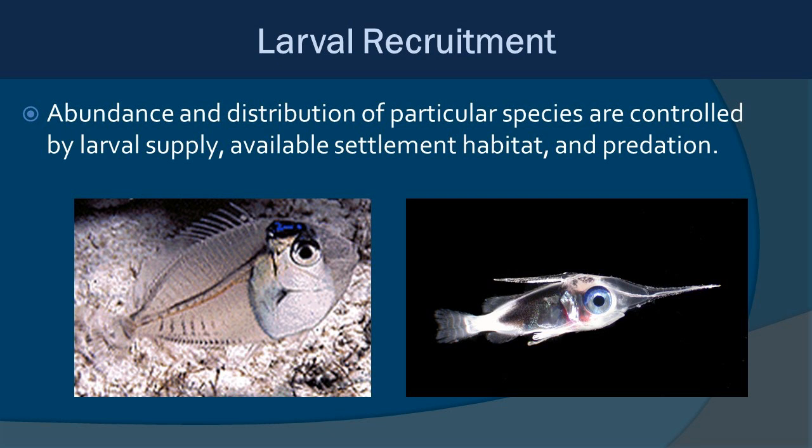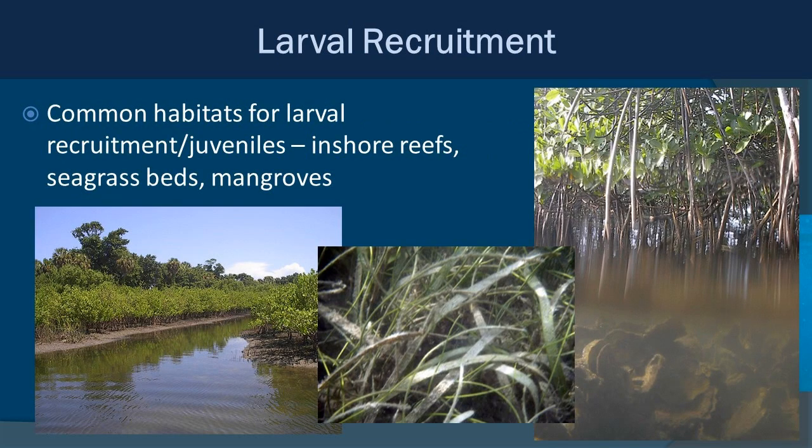In their larval forms, a lot of fish are part of the planktonic community — they flow with water currents to different destinations until they metamorphose into their adult forms. Coastal habitats like estuaries — including mangroves, seagrasses, and oyster beds — as well as near-shore reefs, are great places for larval fish to settle out and grow into their juvenile forms. That's why we call estuaries nursery grounds. This is a key reason why we want to preserve and protect these coastal habitats, as many species grow up there before moving out into open water as adults.